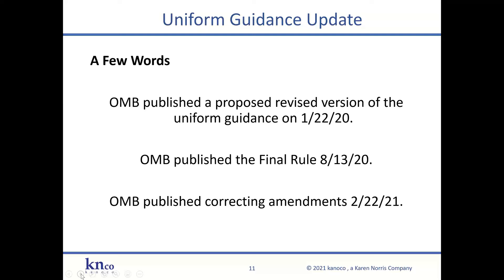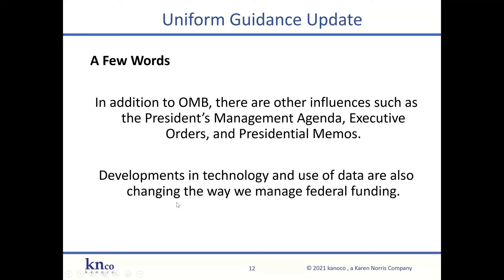The Uniform Guidance is a living document, which means it's going to be updated. It's affected by actions happening in Congress, with OMB, with GAO, and as different legislation is passed. Revisions will occur over time as new legislation and other requirements are implemented. OMB published a proposed revision in January 2020, the final rule in the Federal Register in August, and then a second rule in February with correcting amendments. In addition to OMB, there are other influences such as the President's Management Agenda, executive orders, presidential memos, and developments in technology and the use of data.